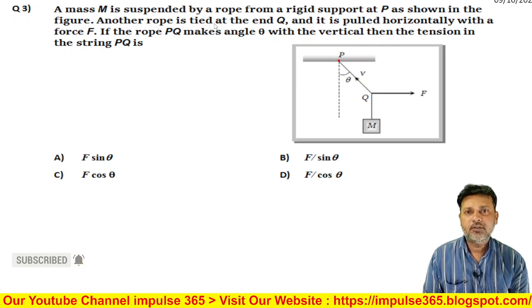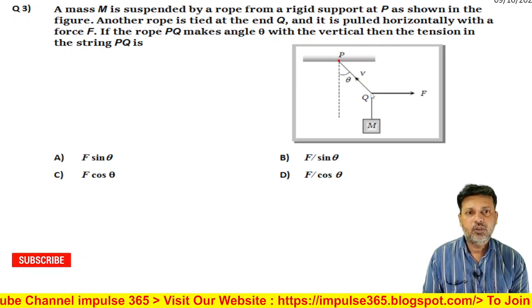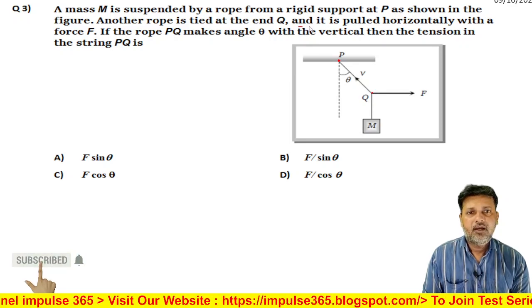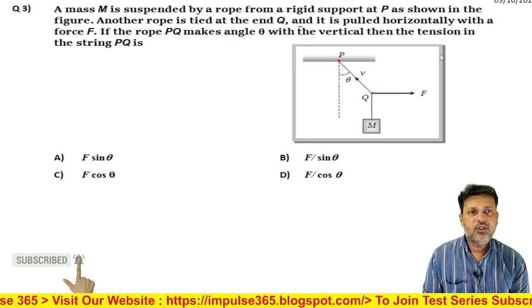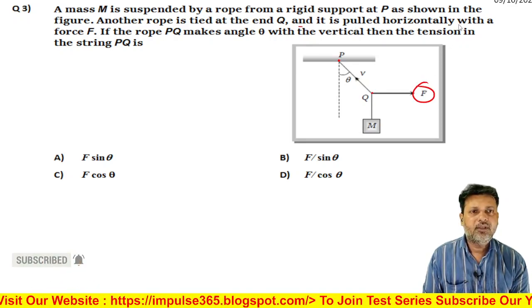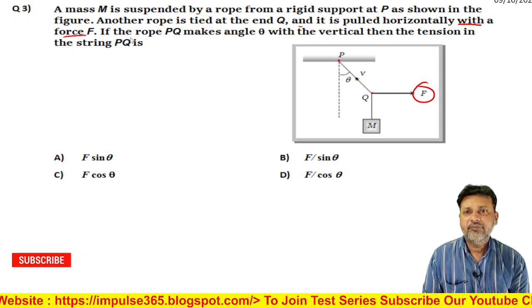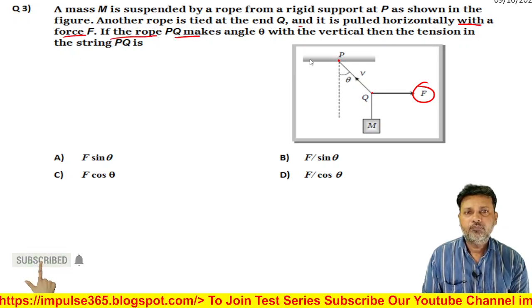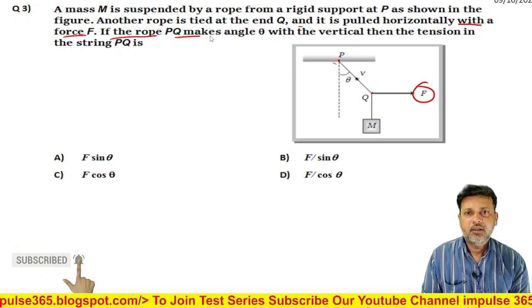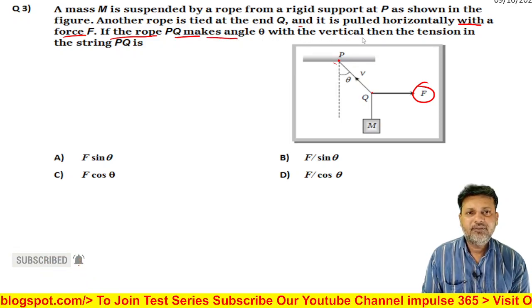As shown in the figure, another rope is tied at the end Q, Q end, and it is pulled horizontally with a force F. If the rope PQ, from P to Q here.